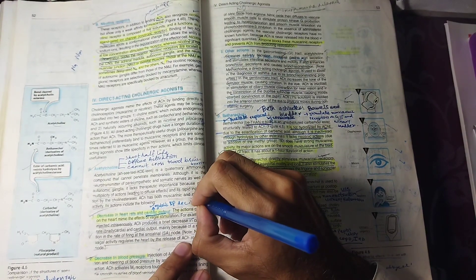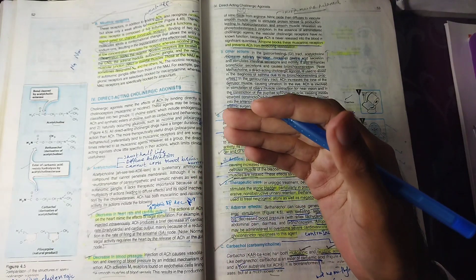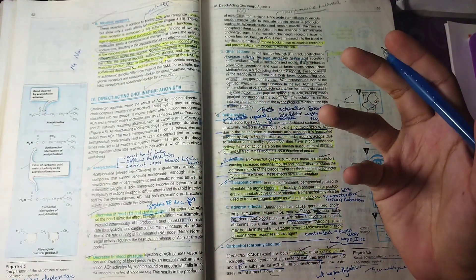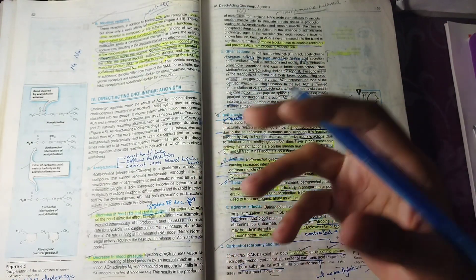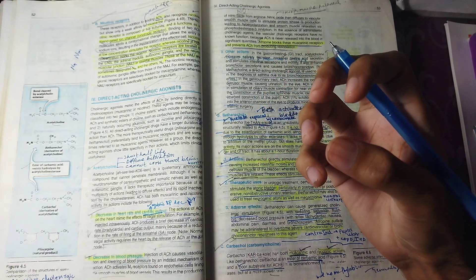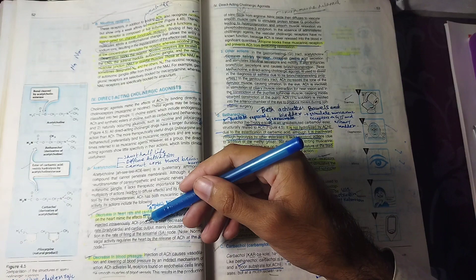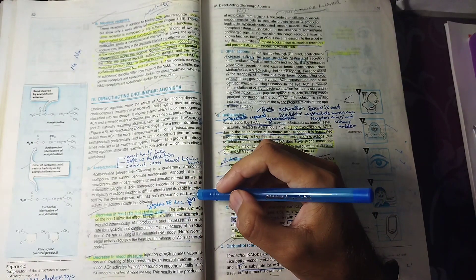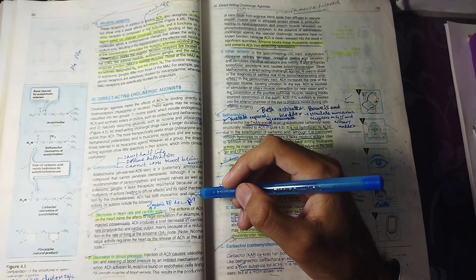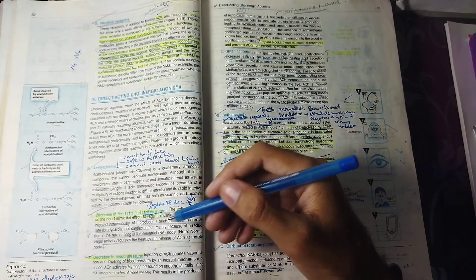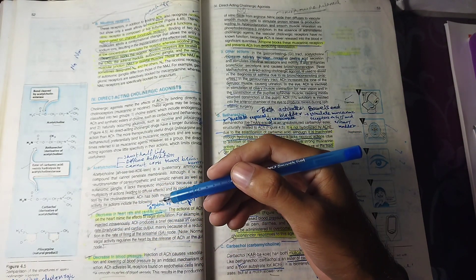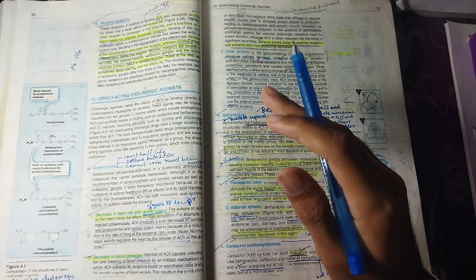Gi is an inhibitory receptor. Gi inhibits adenylyl cyclase and cyclic AMP doesn't form. What happens in our heart? Heart rate is reduced, cardiac output is reduced. When M2 receptors in the heart are activated, cardiac rate and cardiac output will reduce, and this will reduce blood pressure.